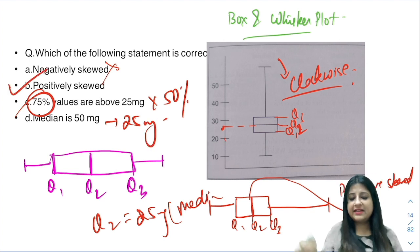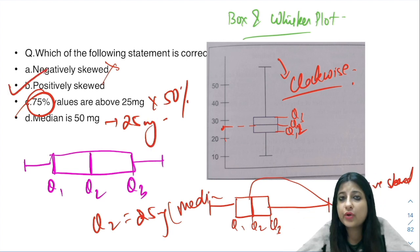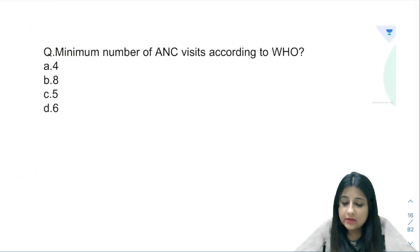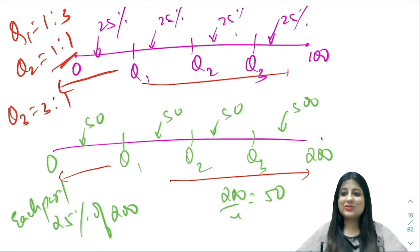So the correct answer is positively skewed. You need to know how to interpret a box and whisker plot. First look at the box if it's normal, look at the tail. Okay, thank you so much.